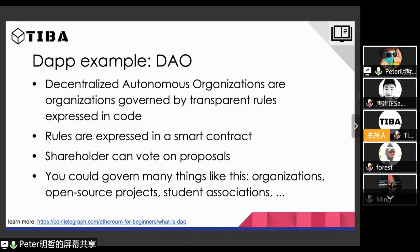Another cool example of a decentralized application is the DAO, which stands for Decentralized Autonomous Organization. The idea is that you lay down the rules for an organization in code and deploy this on the blockchain, where these rules are automatically enforced. Rules are expressed in a smart contract, and then shareholders in the organization can submit proposals and vote on proposals — that is how the organization works. It's a very transparent and democratic way of operation. In theory, TIBA, once we have enough members, could operate like this with a TIBA DAO smart contract where core members might have 20 votes and community members 5 votes.